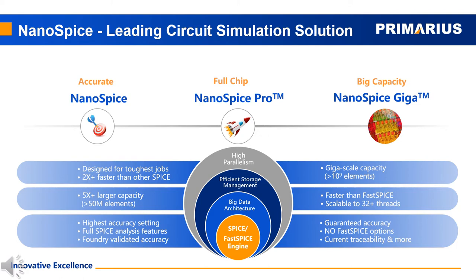Nanospice Giga is the Giga SPICE solution that Primarius introduced to replace traditional Fast SPICE. It runs two times faster than typical Fast SPICE and has Giga scale capacity.